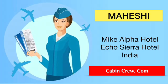With this example, you will surely understand what I am trying to say. My first name is Maheshi. If I want to use this system to explain to someone how to spell my name, I can say: M for Mike, A for Alpha, H for Hotel, E for Echo, S for Sierra, and I for India. So I would simply pronounce it as: Mike, Alpha, Hotel, Echo, Sierra, India.